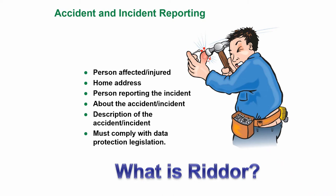To continue with the course: Accident and Incident Reporting. Wherever you work, there is going to be an accident book available, and if you have an accident it must be completed. Even if it's something that almost causes an accident, such as a near miss, that needs to be reported as well. The things you need to put in the accident book include the person affected or injured, their home address, the person reporting the incident, details about the accident and incident, a description of the accident, and it must comply with data protection legislation.